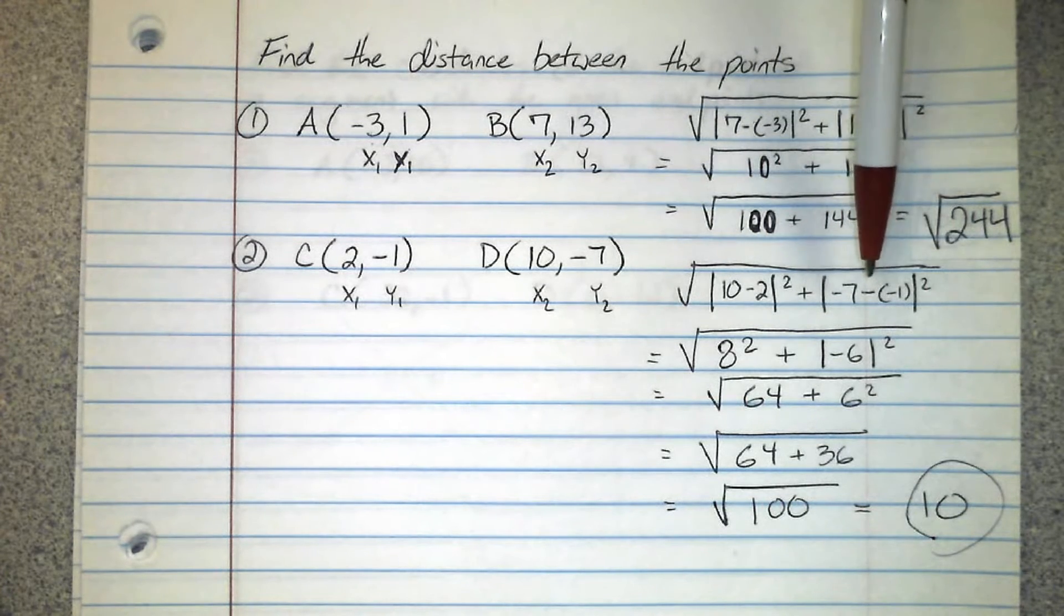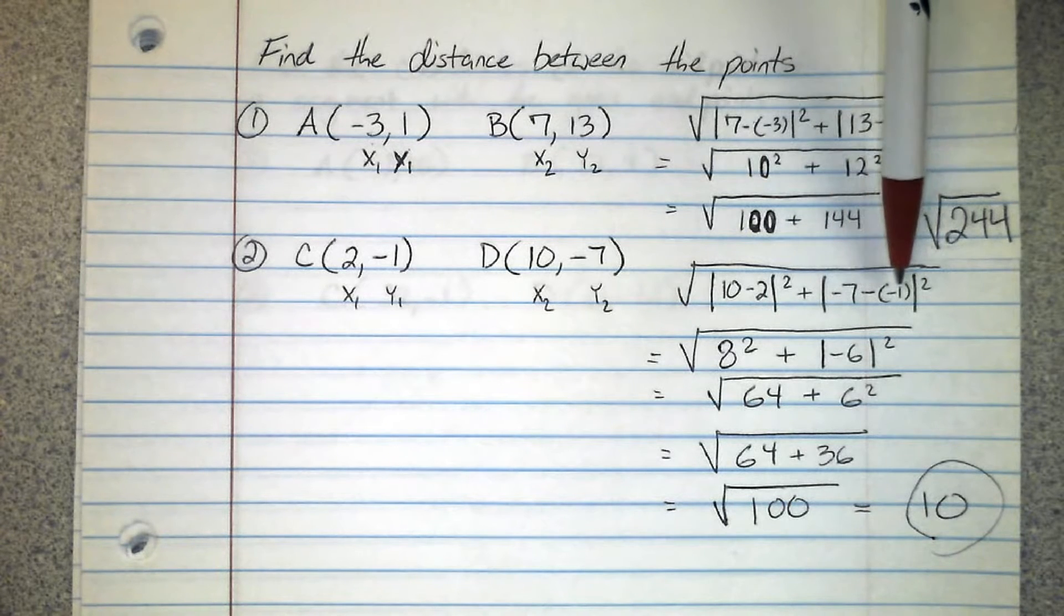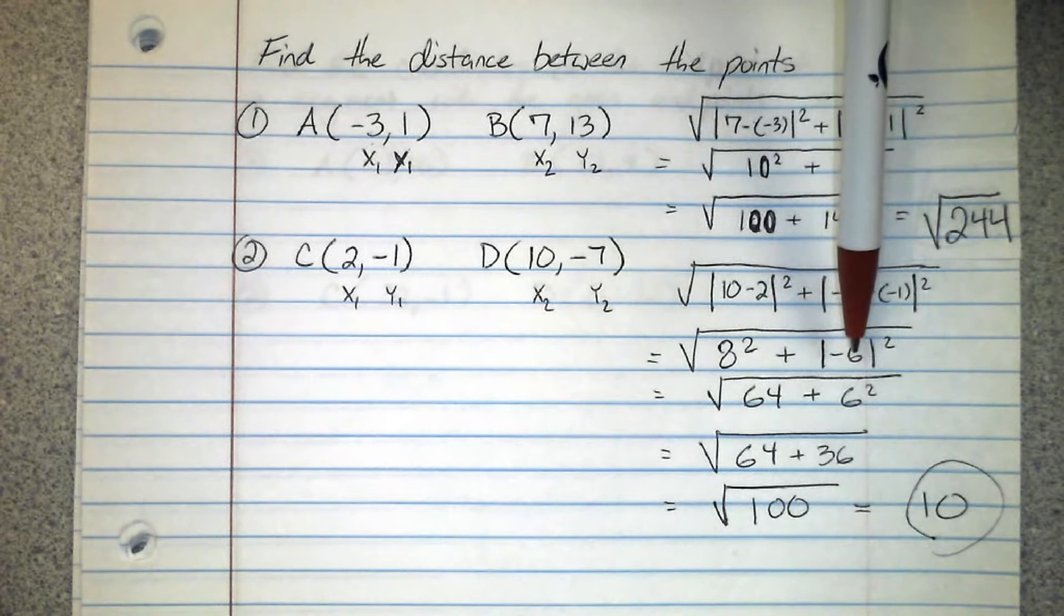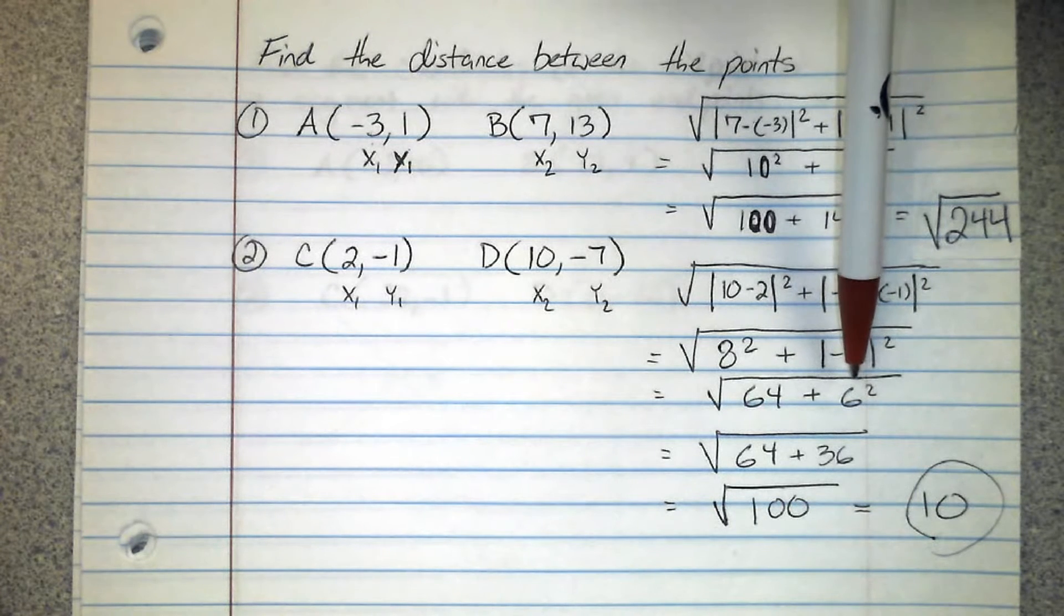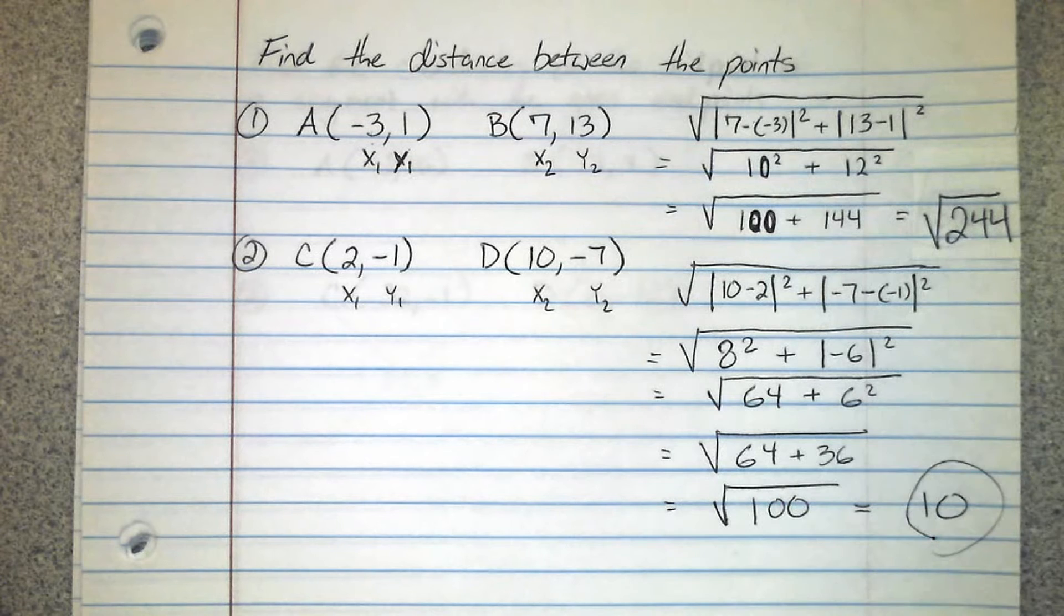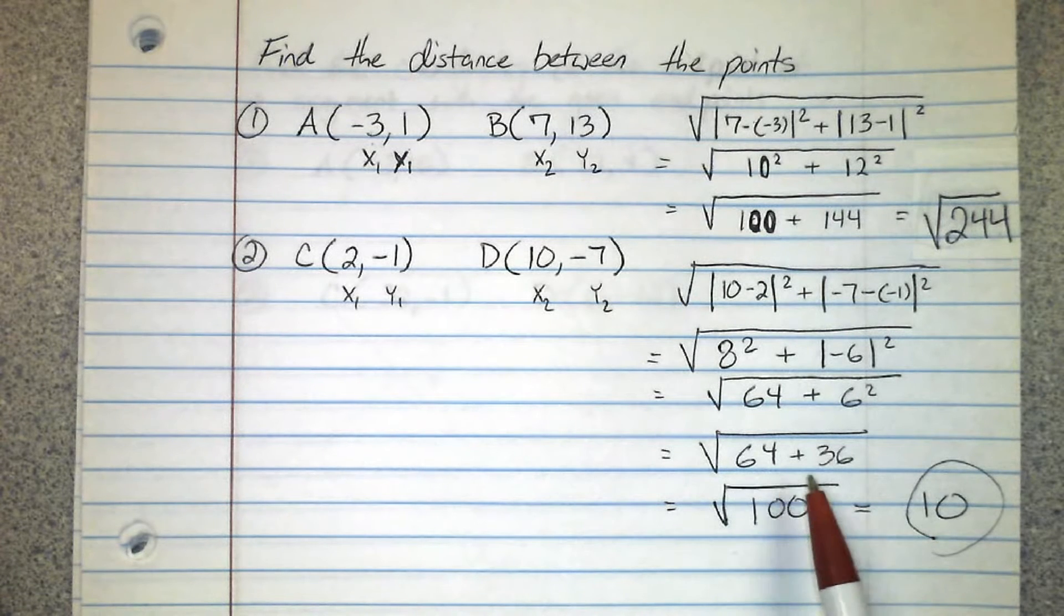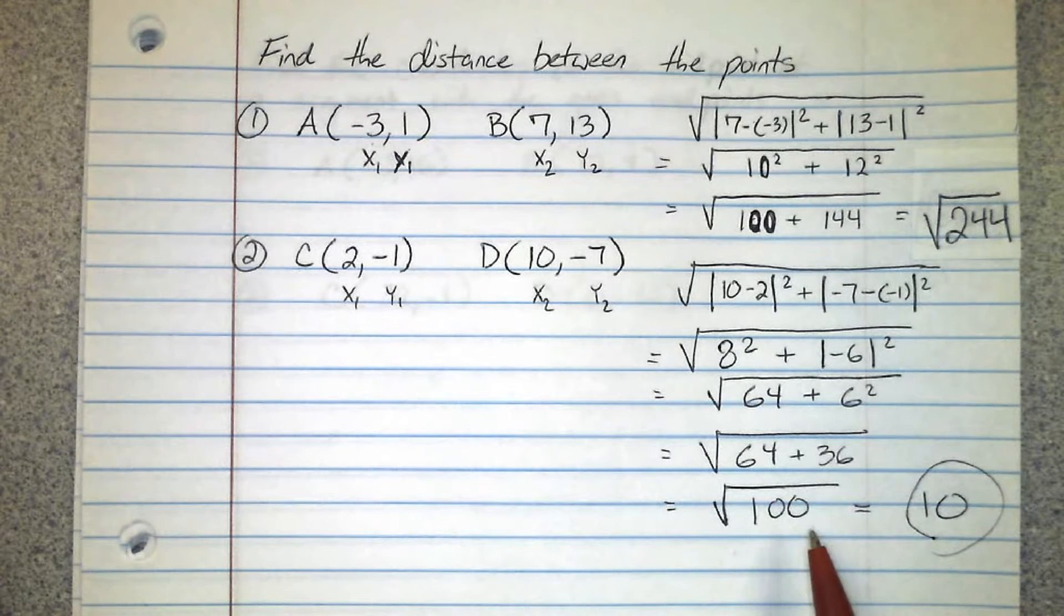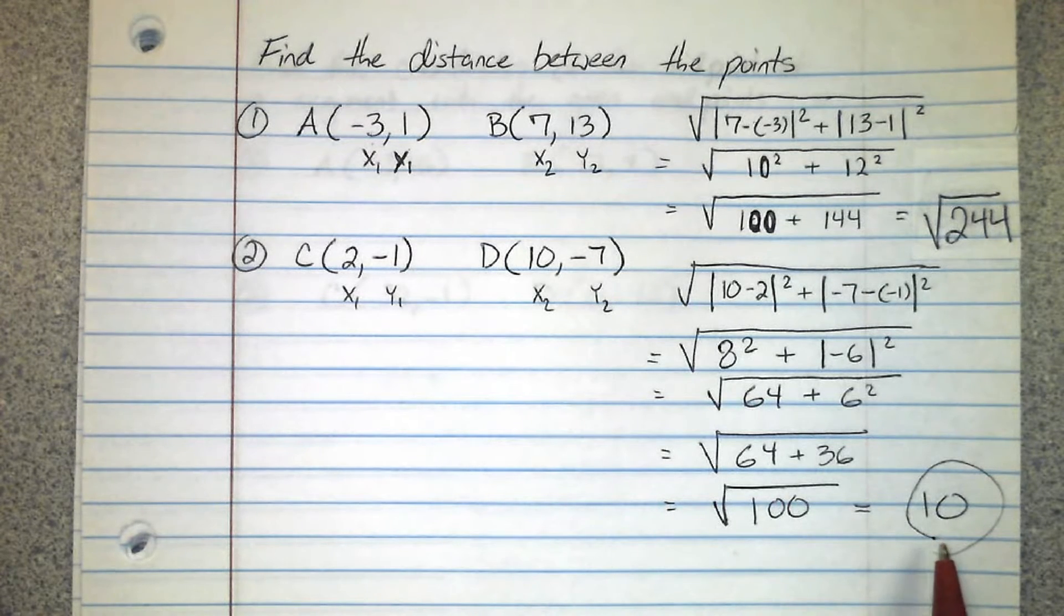Now for this one we do the same thing. Don't forget negative 7 minus negative 1, that's the same thing as negative 7 plus 1 which would be negative 6. Absolute value of negative 6 is going to be positive 6, so we end up with square root of 64 plus 36. 64 plus 36 is 100. Now since this is a perfect square I do want you to simplify that down to 10, don't just leave it as square root 100.